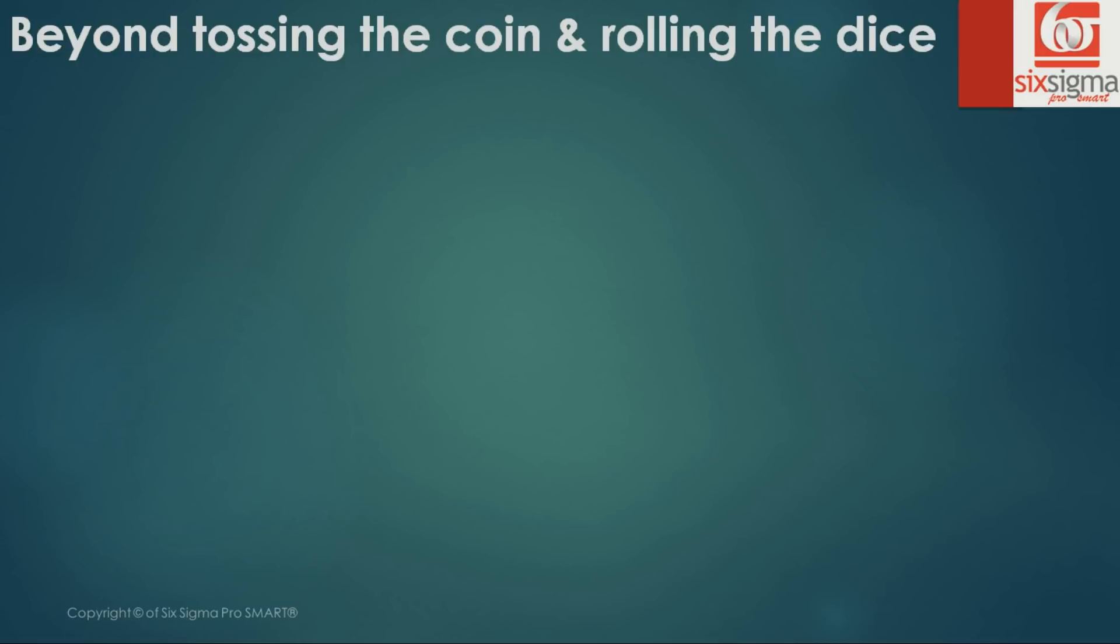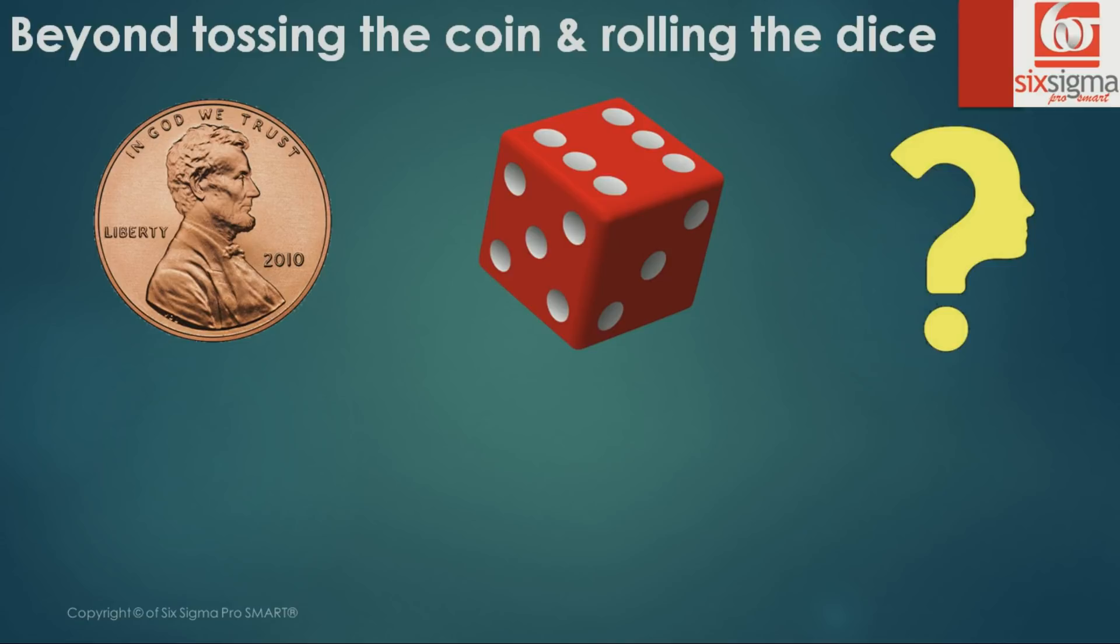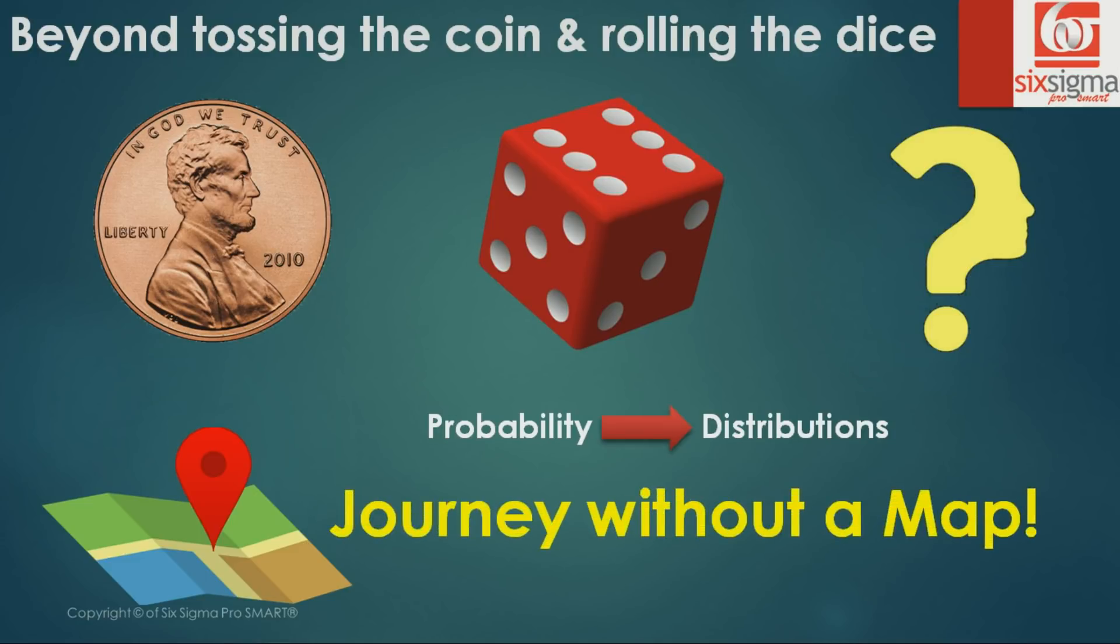Now this is clearly beyond tossing the coin and rolling the die. If you've studied basic probability, you would know what happens when you toss a coin or roll a die, but there are concepts which could be tricky. That's where examiners or interviewers try to differentiate between a person who just has a superficial understanding of the subject versus a person who's really understood the core concepts.